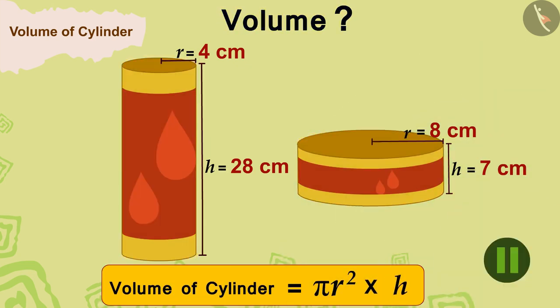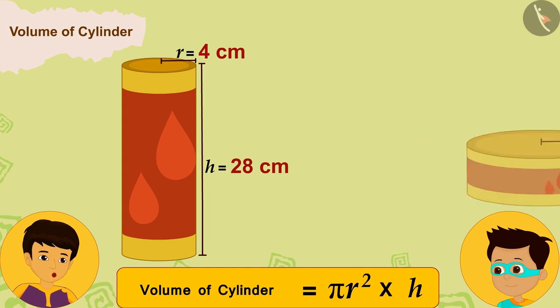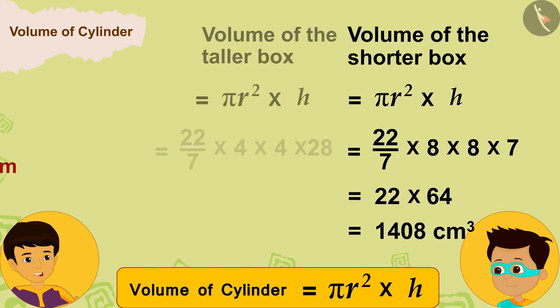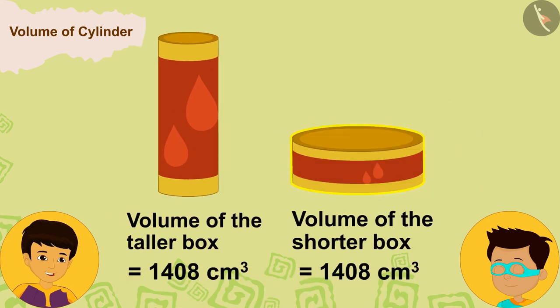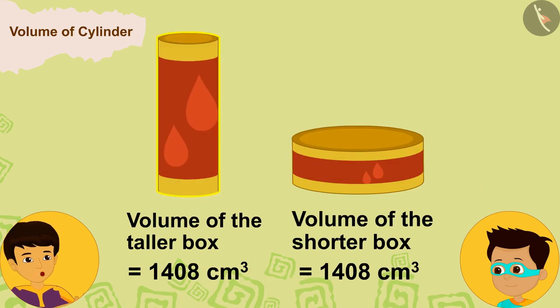Look Thomas, by solving in this way we can see that the volume of the shorter box and the volume of the taller box is exactly 1408 cubic centimeters.